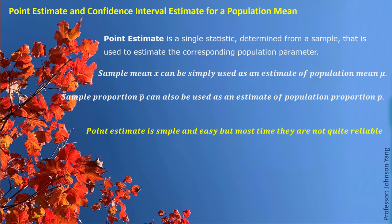When we randomly pick up a simple sample, the sample mean or sample proportion changes with the random sample. The sample mean or sample proportion could be quite close to the real population mean or population proportion, but they could also be far away from it. In that case, point estimates are simple, easy, and logical, but most of the time they are not quite reliable.